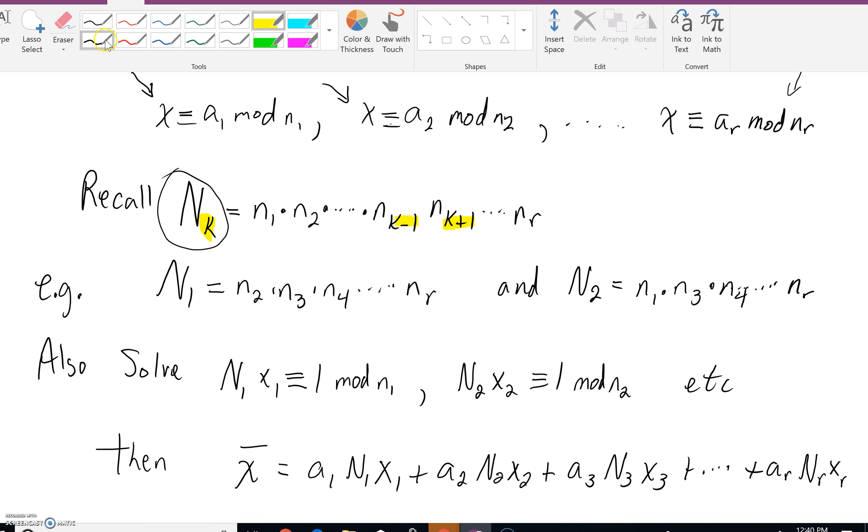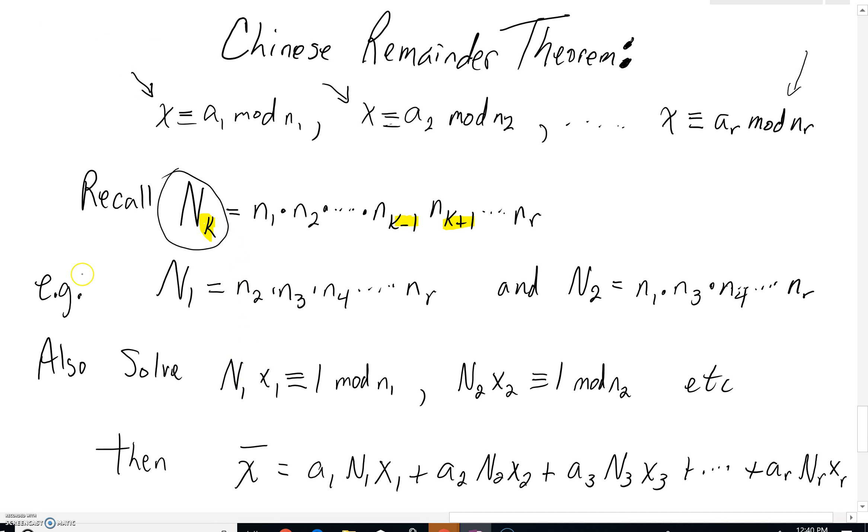For example, n sub 1 would be all those mods multiplied together except for the first one, n sub 1. Likewise, n sub 2 would be all of these mods multiplied together except n sub 2.